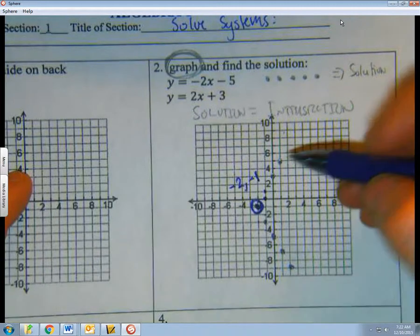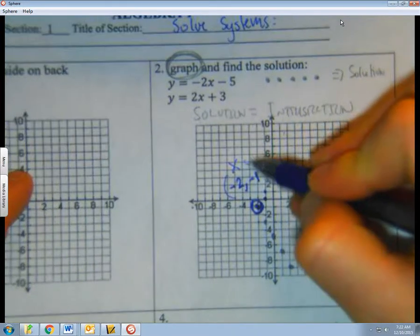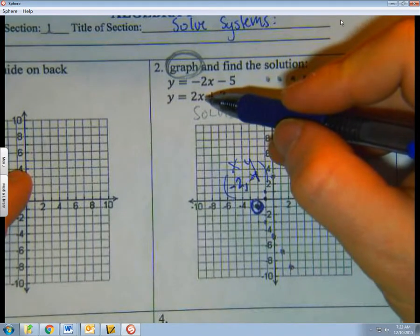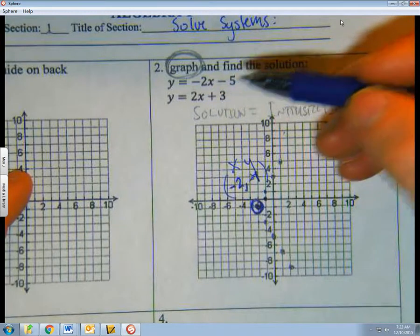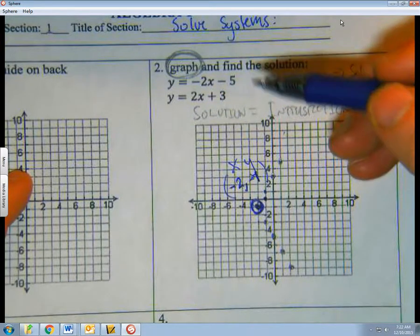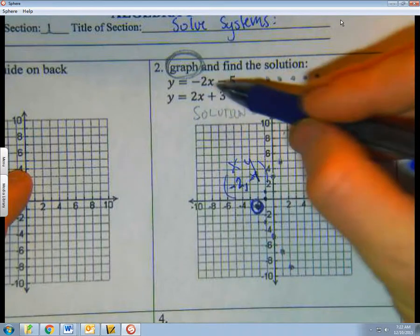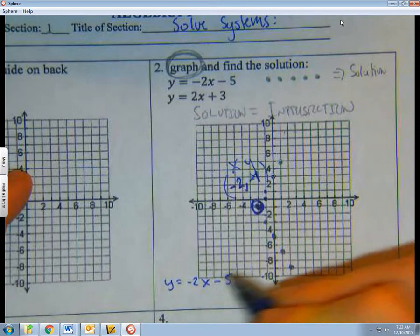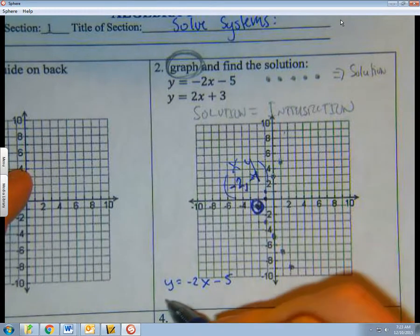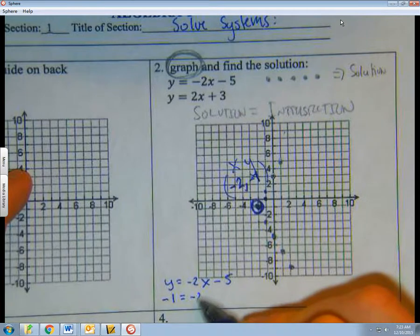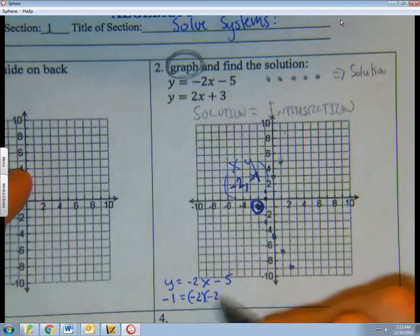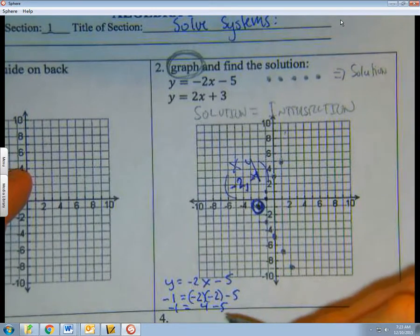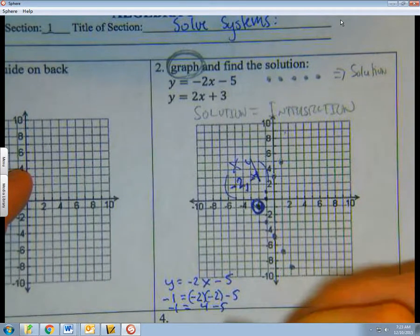So what I'm going to do is I'm going to take this point, x and y, and I'm going to plug it into each one of these equations. And it should be true for each one. Then the whole thing is true. So let's plug it into this equation, y equals negative 2x minus 5. Now y is negative 1, equals negative 2 times negative 2, minus 5. Minus 1 is 4 minus 5. I'm going to stop right there. I should be able to tell that that is true.